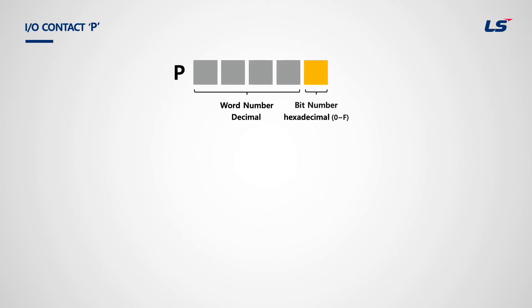Let's look at input-output contact P. Five digits are used to express P memory: the first four are for word and the last one is for bit. What's important is that the digits of memory are different depending on the product. Users need to be aware that the last digit shown in hexadecimal is bit. The other digits are word, expressed in decimal, while the bit is in hexadecimal.